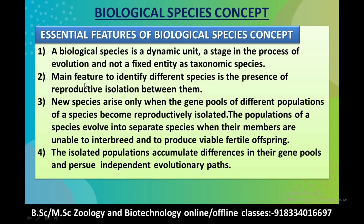The second characteristic feature is that the main feature to identify different species is the presence of reproductive isolation between them. The third characteristic feature is that new species arise only when the gene pools of different populations of a species become reproductively isolated.